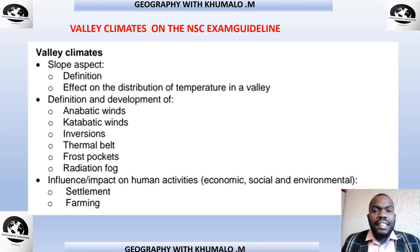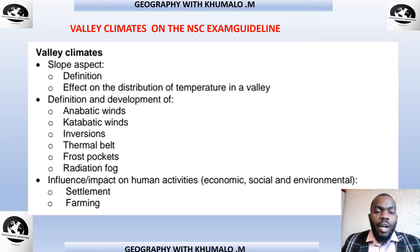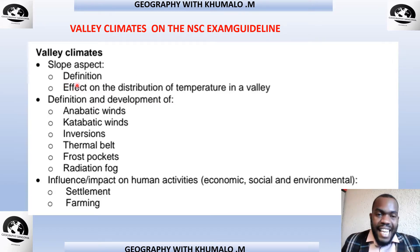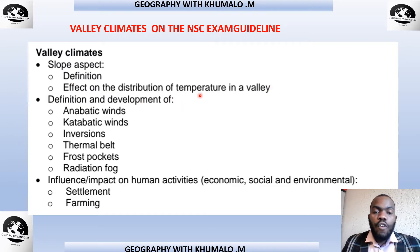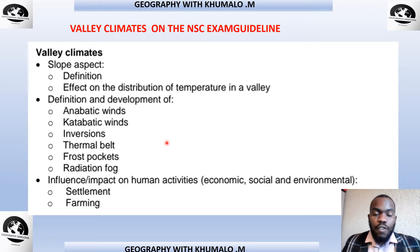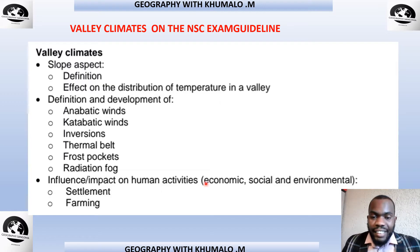Now, what is required from you as a learner for the exam? On the examination guideline, the examiners will expect you to know the definition of slope aspect, its effect on the distribution of temperature in a valley, the definition and development of anabatic winds, catabatic winds, the inversion layer, the thermal belt, the frost pocket, radiation fog, and the influence and impact on human activities — looking at the economic, social, and environmental.